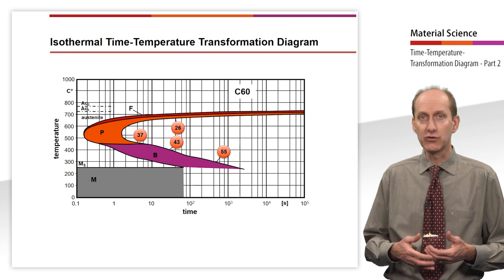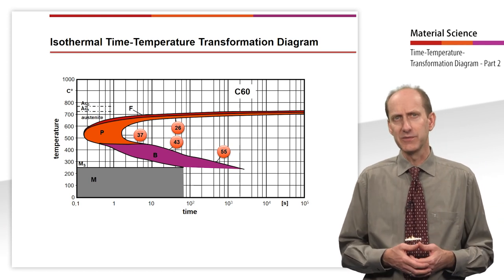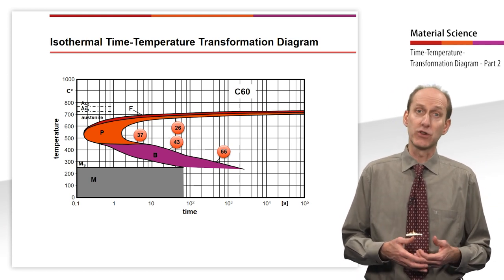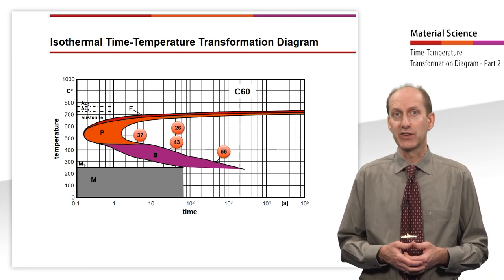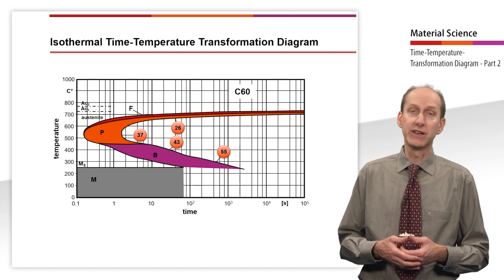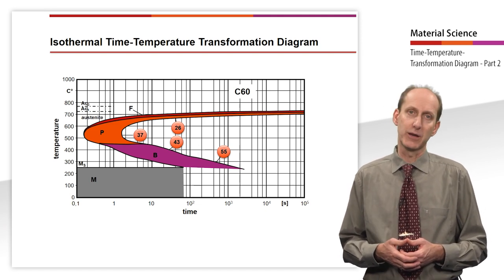Even if the aim is generally to achieve a bainitic structure, it would also be possible to achieve a conversion to a purely pearlitic structure with somewhat lower hardness for the analyte steel C60 shown here as an example.